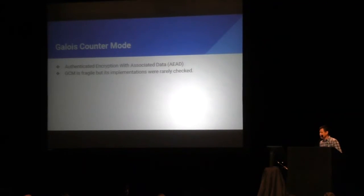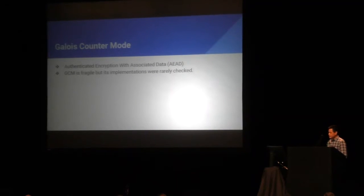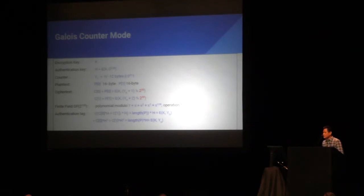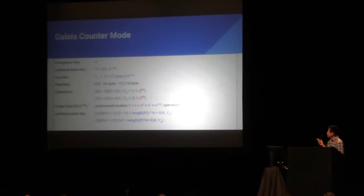Let's move on to Galois/Counter Mode. This is a low-level primitive that I also did a security review for. GCM is kind of fragile — there are a few attacks in academia — but people rarely look at its implementation. For a recap: GCM has an encryption key and an authentication key. The encryption is basically counter mode, but the counter is incremented modulo 2 to the 32. This is important and we'll come back to it. The authentication tag is, if you look at the last equation, essentially a polynomial of the authentication key where the coefficients are the ciphertext blocks.